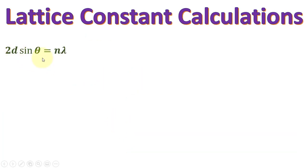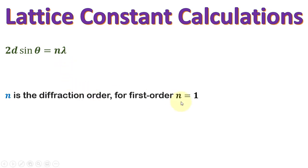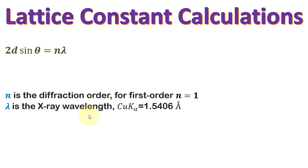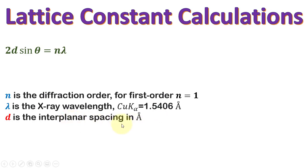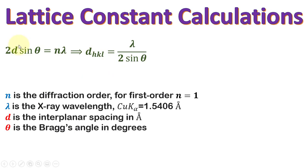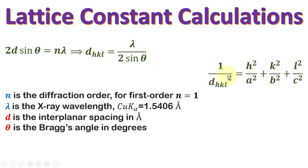In Bragg's law of diffraction, 2d sin(θ) = Nλ, where N is the diffraction order — we usually consider first order and take N equals 1. Lambda is the X-ray wavelength; for a copper source it is 1.5406 angstrom. D is the interplanar spacing in angstrom, and theta is the Bragg angle in degrees. From our XRD data we need the value of theta, then calculate D-HKL equals lambda over 2 sin(θ), and use D-HKL to find the lattice constants.